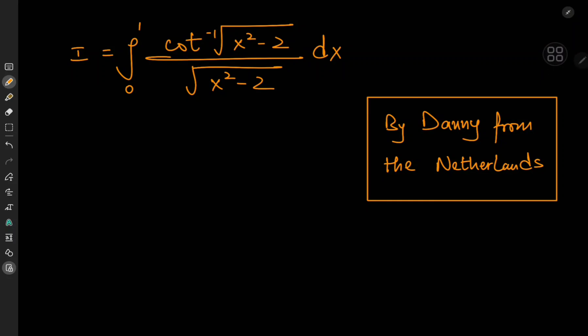Hello and welcome back. This is Kamal, and today we have a really cool integral suggested by my good friend Danny from the Netherlands. Thank you Danny for the integral, and thank you the Netherlands for Virgil van Dijk. So what we have here is the integral from 0 to 1 of the inverse cotangent of root x squared minus 2, divided by root x squared minus 2.